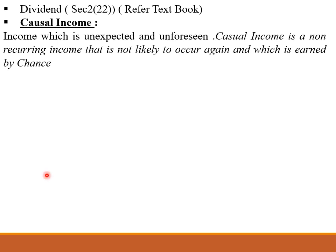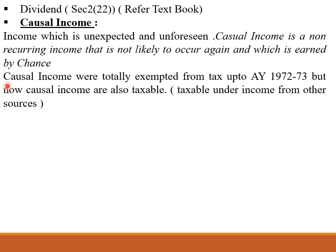The next definition is Casual Income. Casual income is income which is unseen, unforeseen, and unexpected. It is income whose occurrence is not certain — it may or may not happen. It is of a non-recurring nature and occurs by chance. For example, winning money in a lottery or a horse race. Casual income forms part of Income from Other Sources. Previously, casual income was totally exempted from tax up to 1922 and 1973, but now casual income is also taxable and it is taxable under the head Income from Other Sources.